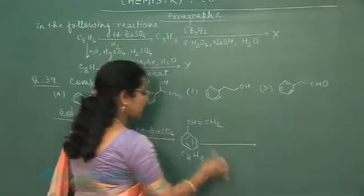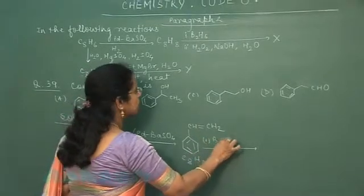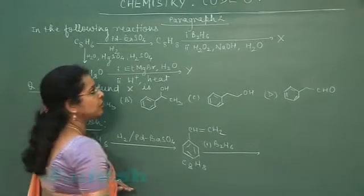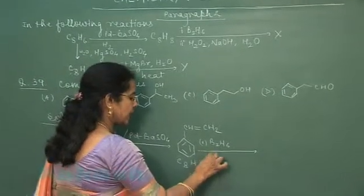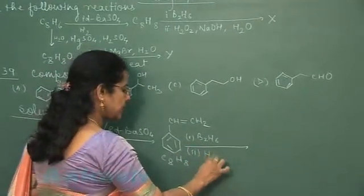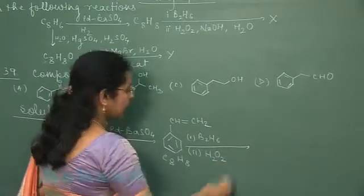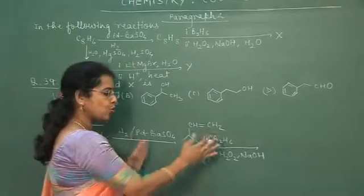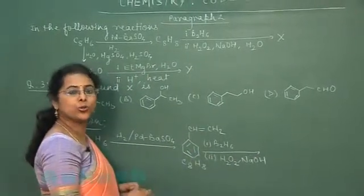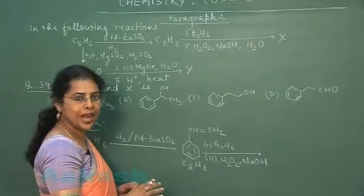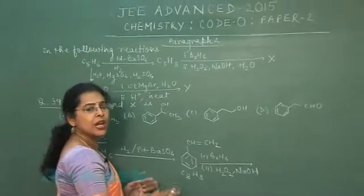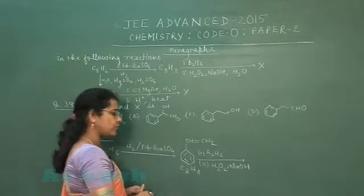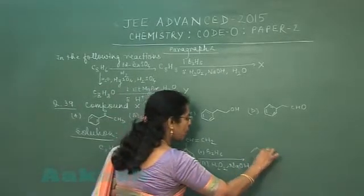Now this compound upon reaction with B2H6, this is hydroboration of alkene, and second step is alkaline hydrogen peroxide. So overall reaction is hydroboration oxidation of alkene. It means addition of water, anti-Markovnikov addition of water and formation of alcohol.